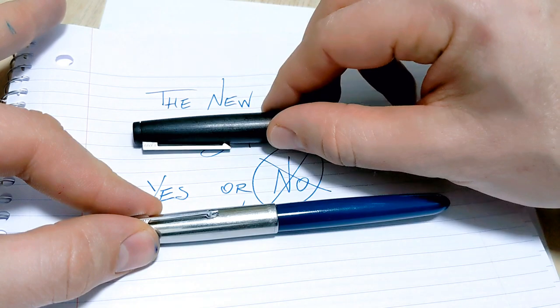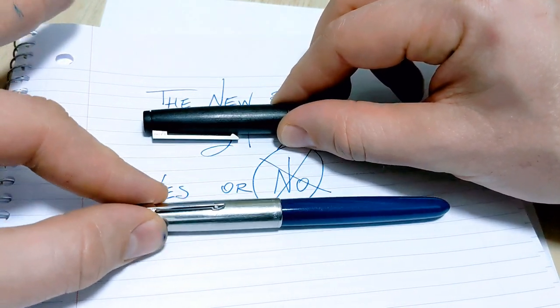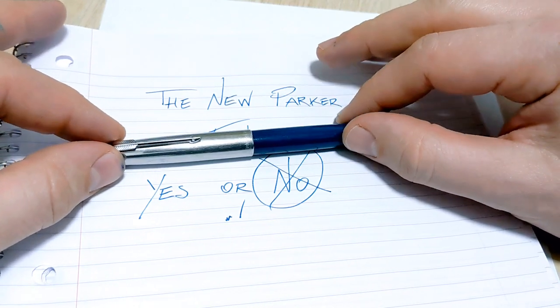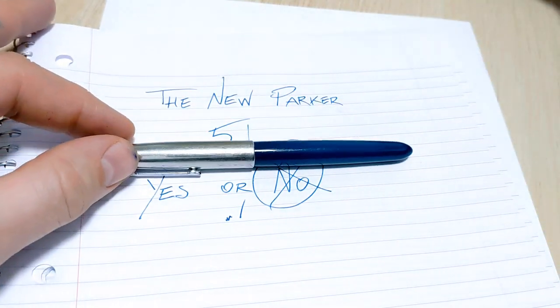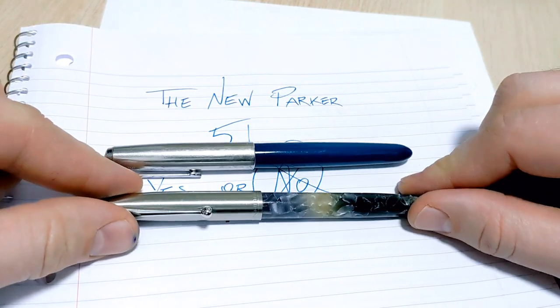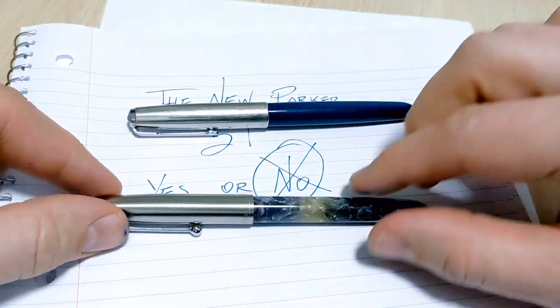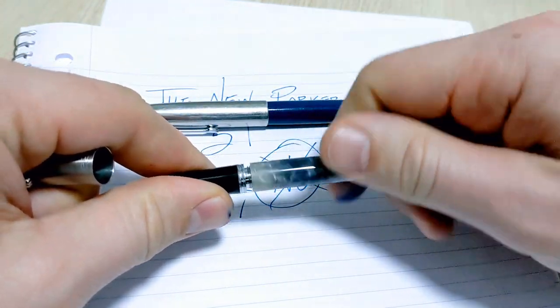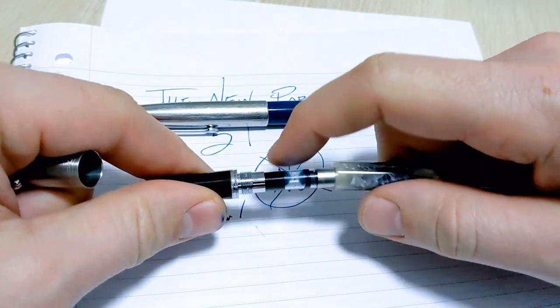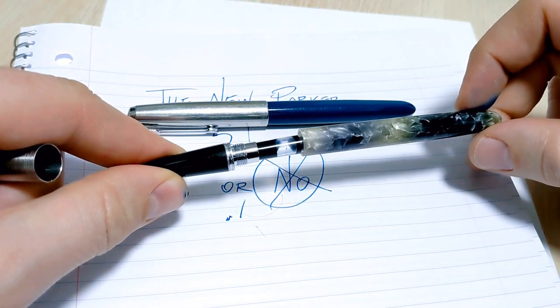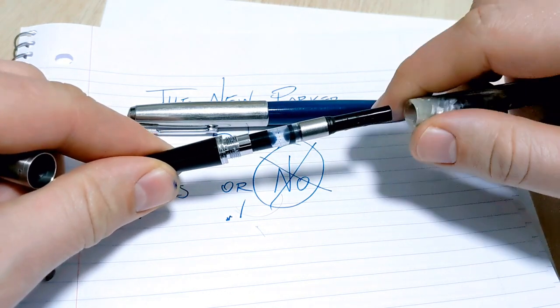Steal some of the little wins that the Lamy has over the Parker 51 and make it the ultimate best pen ever, right? They didn't do that. It almost seems like Parker made their own version of the Jinhao 51A to be honest. One of my gripes on this guy was metal threads here on the plastic body - they have that on the new 51. They also just did a converter.